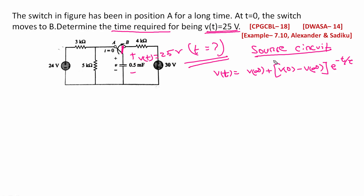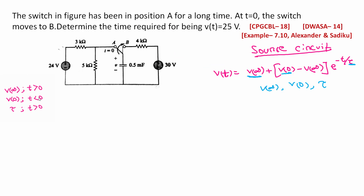The first target is the source circuit and the source-free circuit. We will use the source circuit equation. The next target is to calculate VT which is 25V, then the time. Now we know the problem: we need to find V0, V-infinity for T greater than 0 (steady state), and tau — R-equivalent times C.